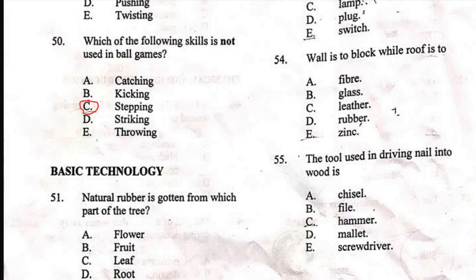Question 54 says: 'Wall is to block as roof is to what?' Options are: A) fiber, B) glass, C) leather, D) rubber, E) zinc. You use blocks to make a wall, so similarly a roof is made up of zinc. The correct option is E, zinc.